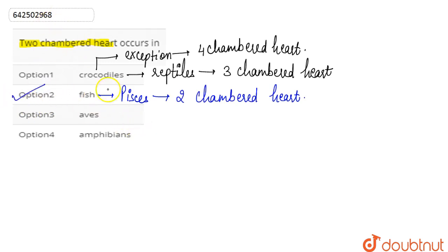Now we look at the other option, aves. Aves are basically the birds. So all the birds have a four-chambered heart, and they are basically warm-blooded.